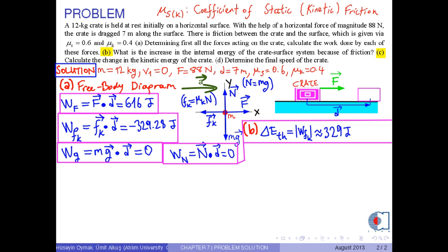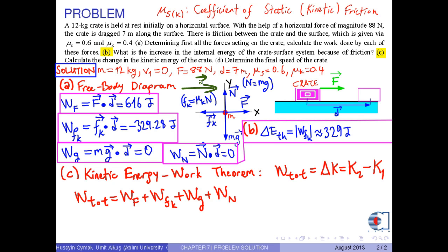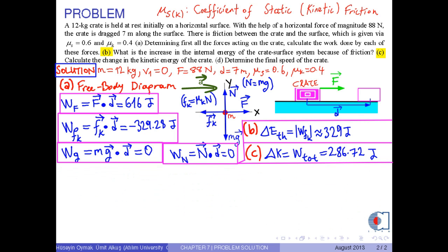Part C: Calculate the change in the kinetic energy of the crate. Here, we can use the kinetic energy work theorem, which states that total work equals delta K, where delta K is the change in the kinetic energy of the crate. We know that total work is the sum of the works done by each of these forces. Therefore, with the numerical values, we obtain 286.72 joules, which is approximately 287 joules. So, this is the change in the kinetic energy of the crate.